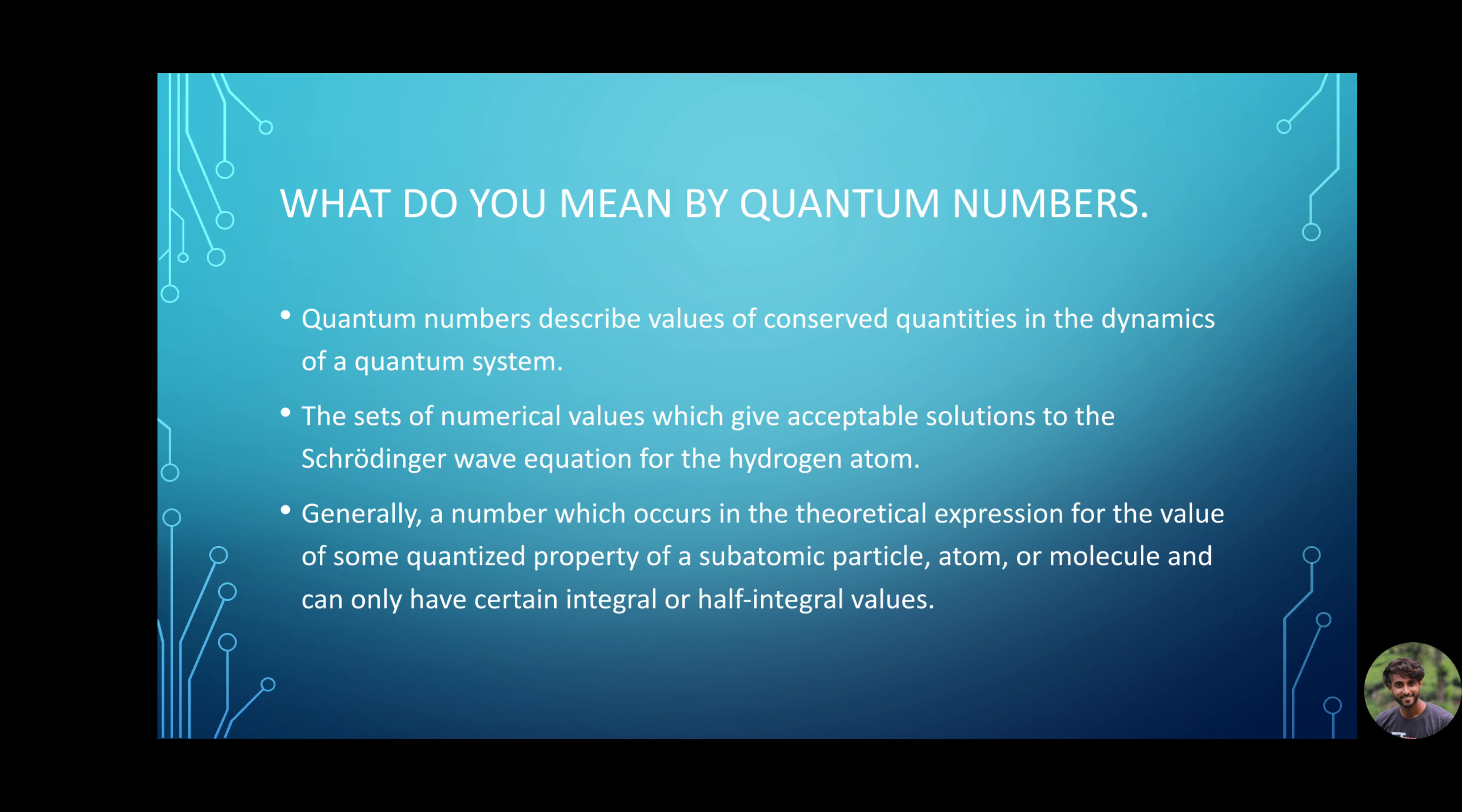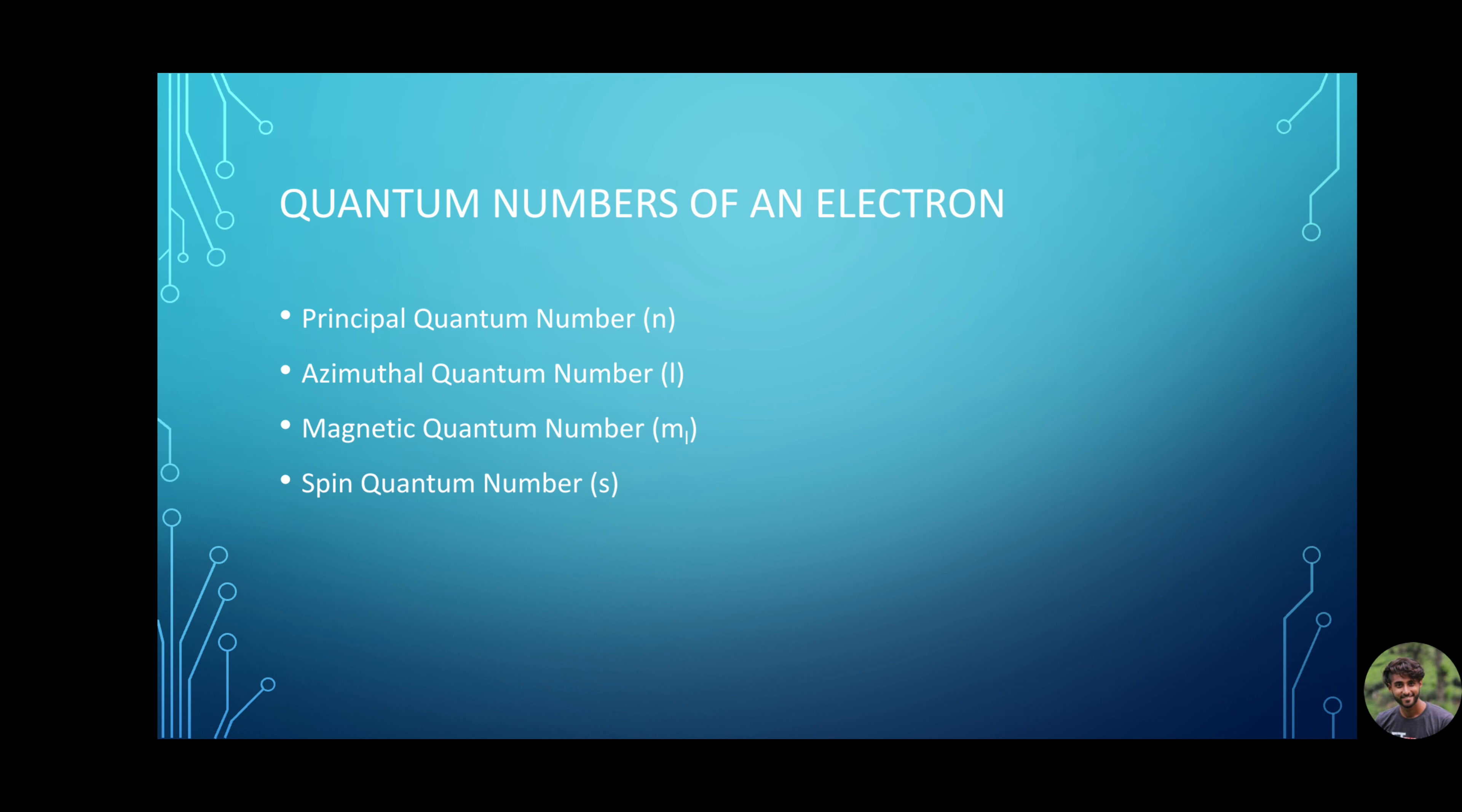Quantum numbers are the set of numerical values which give acceptable solutions to the Schrodinger wave equation for the hydrogen atom. Generally, a number which occurs in the theoretical expression for the value of some quantized property of a subatomic particle, atom, or molecule. They can only have certain integral or half integral values. Before going to the elementary particle, let us discuss the quantum numbers we are familiar with.